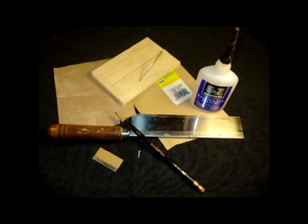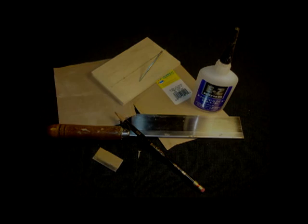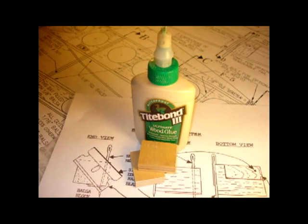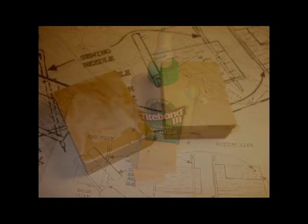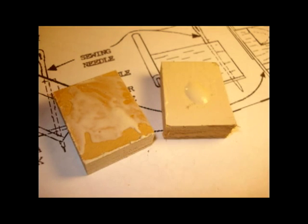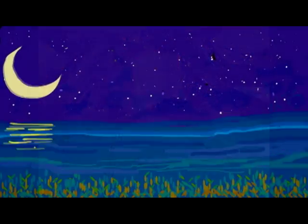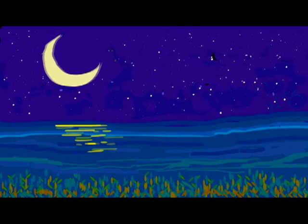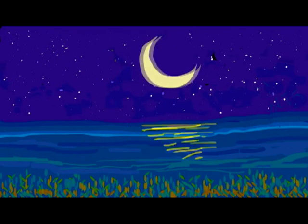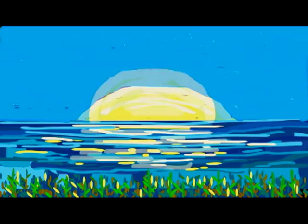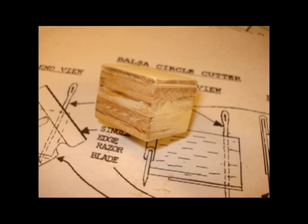With these supplies, we'll construct our little circle cutter. I cut two pieces of the half inch plywood to size, added a little glue between them, clamped them up, and allowed them to dry overnight. In the morning, I had a perfect little square to start our project.